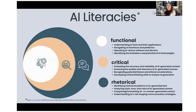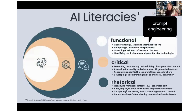The third type is rhetorical literacy — a much deeper way to think about AI. This is when you determine rhetorical patterns, analyze style, voice, tone, and understand how AI might shape the world of communication goals and strategies. For today's prompt engineering focus, we're really focused on functional literacy: understanding these tools, what they do, how they work, because prompt engineering is just talking to them.